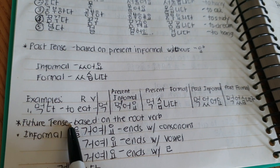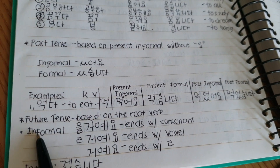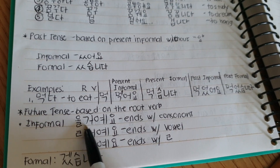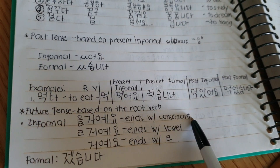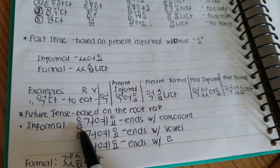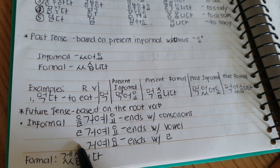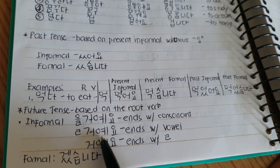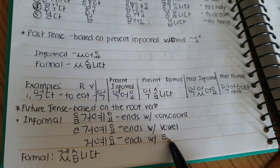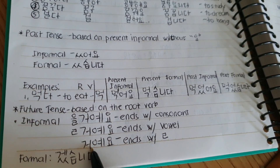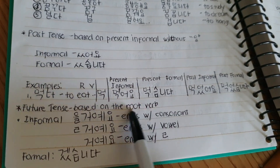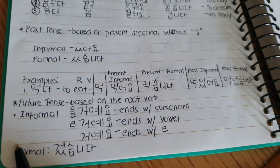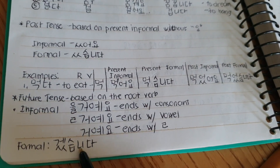For the future tense, the basis is the root verb. For informal: if the root ends with a consonant, add 'el koyo'; if it ends with a vowel, add 'real koyo'; if it ends with 'real', just add 'koyo'. For the formal form, you add 'get-sumnida'.